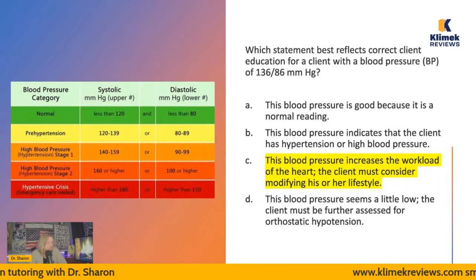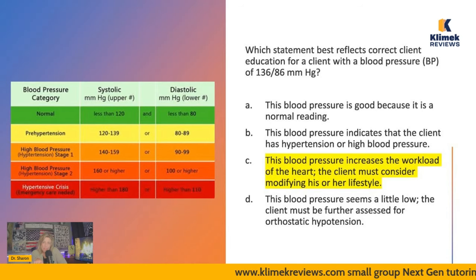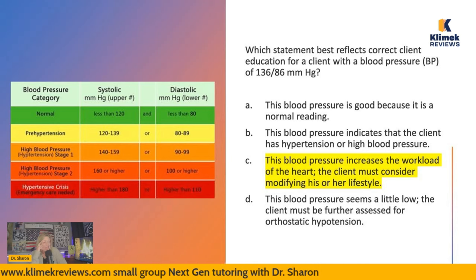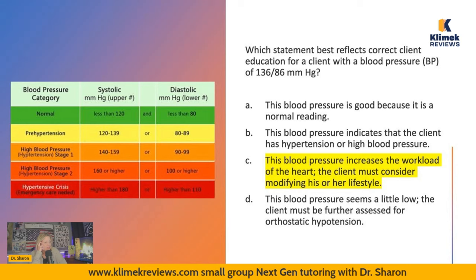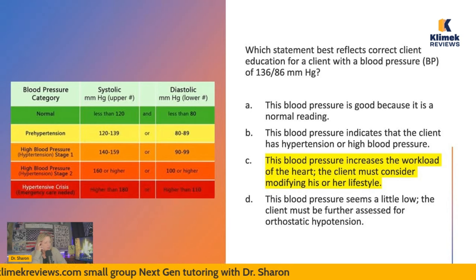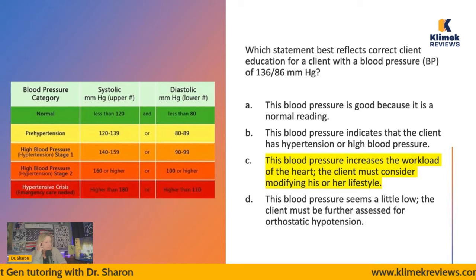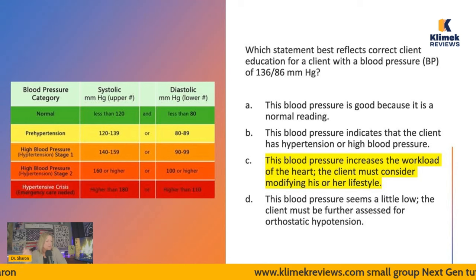Normal blood pressure is now considered less than 120 over 80. Pre-hypertension is 120–139 systolic and 80–89 diastolic. High blood pressure stage one is 140–159 over 90–99. Stage two is 160 or higher, or 100 or higher. A hypertensive crisis is higher than 180 or higher than 110. I hope that was helpful — have a good rest of your day. Bye.